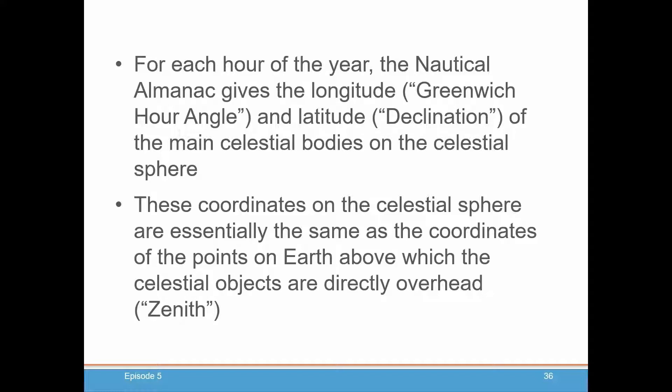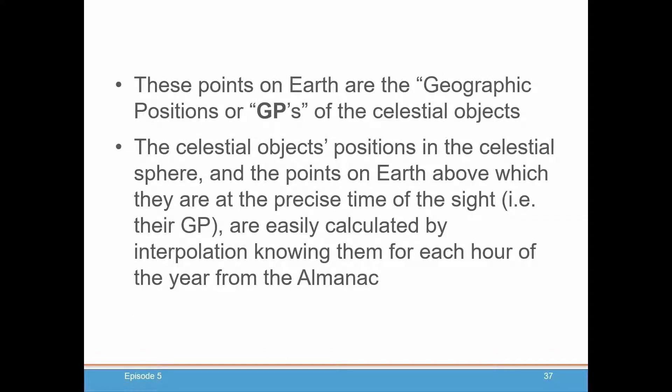These coordinates on the celestial sphere are essentially the same as the coordinates of the points on the Earth above which the celestial objects you're sighting with your sextant are directly overhead. These objects' positions in the celestial sphere as determined by the precise time of your sight are easily calculated using the Nautical Almanac.